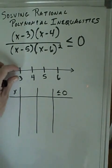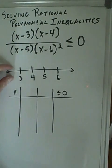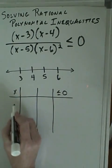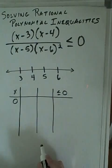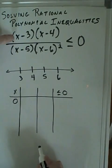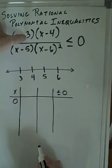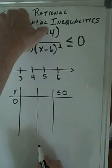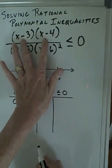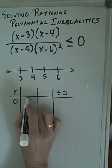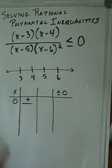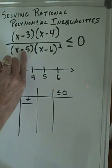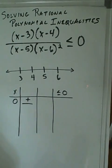So the first thing we do is we pick a value that is less than three. Let's say zero. We're going to plug zero into our equation. Zero minus three is a negative. Zero minus four is a negative. A negative times a negative would be a positive. Then we go to the denominator. Zero minus five is a negative.